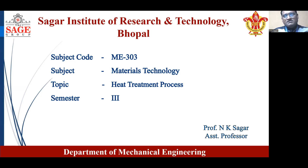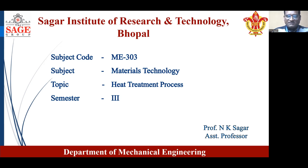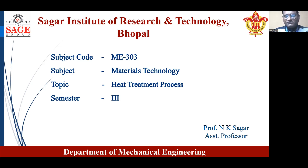In the earlier sessions we have covered the basic part of the heat treatment process. We have discussed about the definition of heat treatment process, what are the cooling mediums for the heat treatment process, what are the different stages through which the heat treatment process is carried out. Then after that we have discussed about the classification of the heat treatment process, how the heat treatment processes are classified according to bulk heat treatment process and surface heat treatment process.